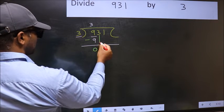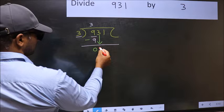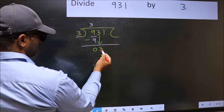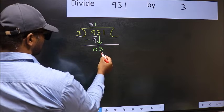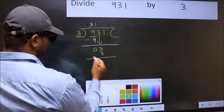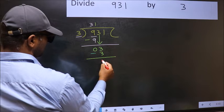After this, bring down the next number. So, 3 down. Now 3. When do we get 3 in the 3 table? 3 once, 3. Now you should subtract. 3 minus 3, 0.